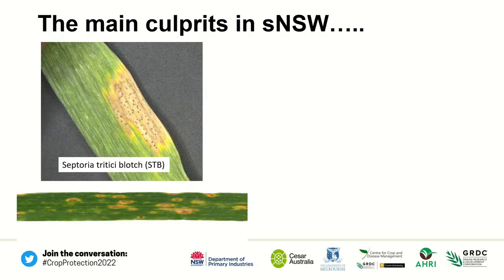The main culprits in southern New South Wales — these two pictures here — are septoria tritici blotch and yellow leaf spot. They often co-exist in the same paddocks on the same varieties and can be quite difficult to tell apart at some points.